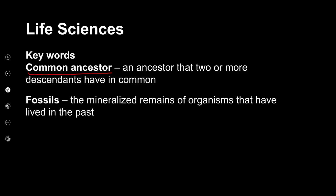The first keyword we're going to look at is common ancestor. If we break up that term, common means where we have things that are similar or the same, and ancestor is somebody that we have descended from. So basically it's an ancestor that two or more descendants have in common — they share that ancestor.